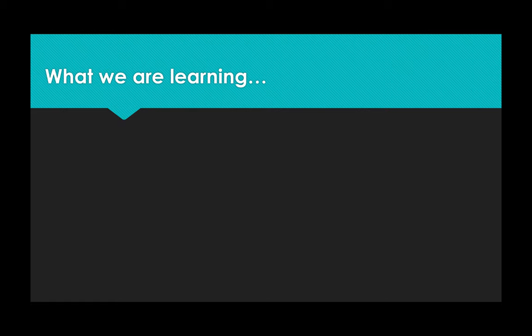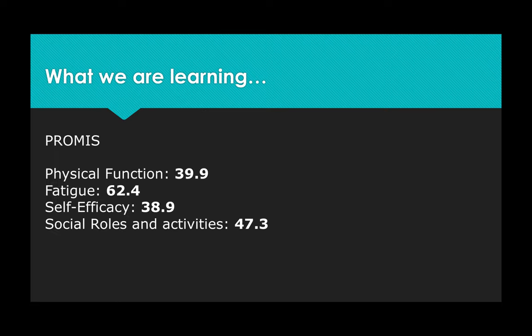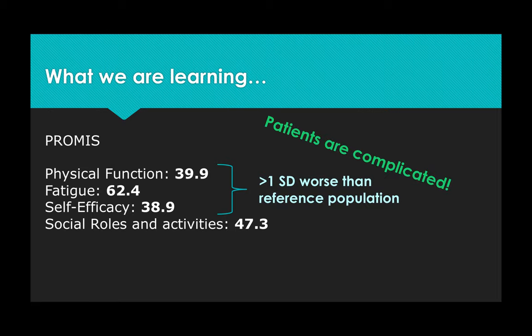So what do you think? Were psychosocial issues at play? Let's take a look at the PROMIS scores and see what they say. Physical function, fatigue, and self-efficacy, all about a standard deviation worse than the reference population. We'll talk more about fatigue and self-efficacy in the next module. Notice that social roles for her, though, was equal to the U.S. average. What we're learning is consistently we can detect these other psychosocial issues using the PROMIS scales.